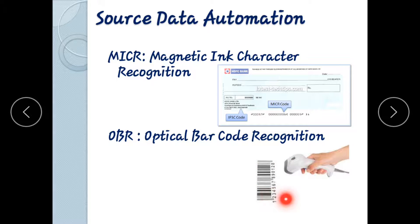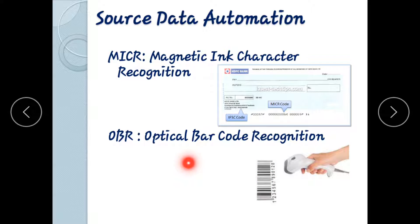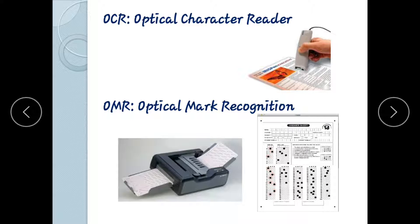Barcode — a hand barcode can be used at a counter. The barcode scanner reads the barcode and product details come in — product make and other information.